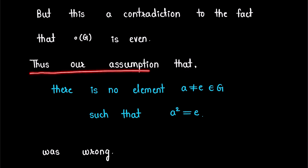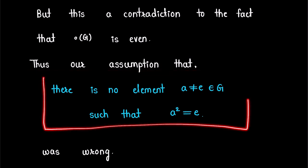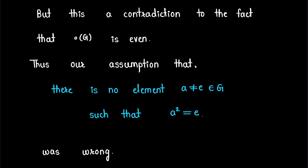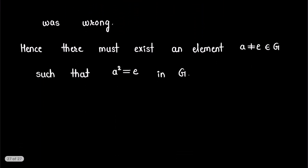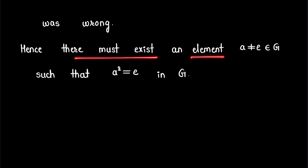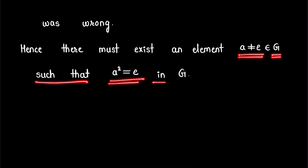Thus our assumption that there is no element a ≠ e in G such that a² = e was wrong, as we get a contradiction to the fact that the order of G is even. Therefore, there must exist an element a ≠ e in G such that a² = e, and this proves our result.